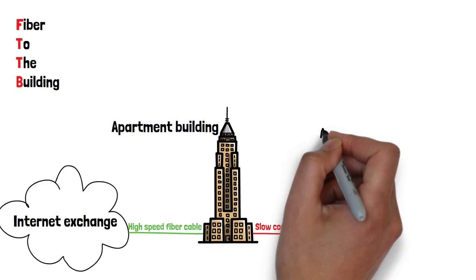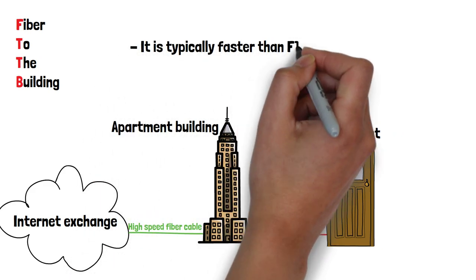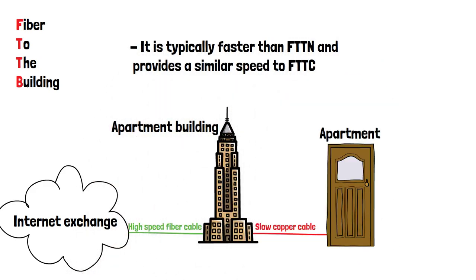This type of fiber internet is used in multi-unit buildings such as apartments or office buildings. It is typically faster than FTTN and provides a similar speed to FTTC.